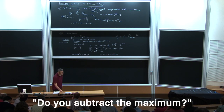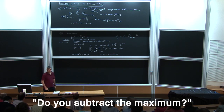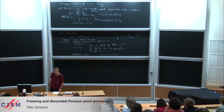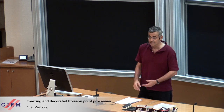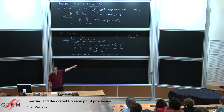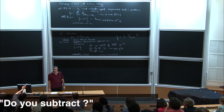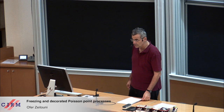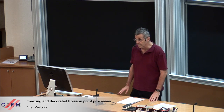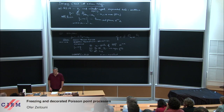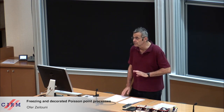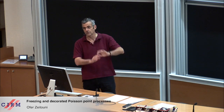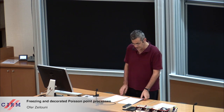I subtract a deterministic quantity M_N, not the max itself. Of course if you subtract the max, it cannot be of this type — this type has positive probability of having positive points. You cannot get a Poisson point process with intensity e^{-x} if you subtract the max, because all points will be negative. There are descriptions also of the process viewed from the edge, but I do not want to discuss that.